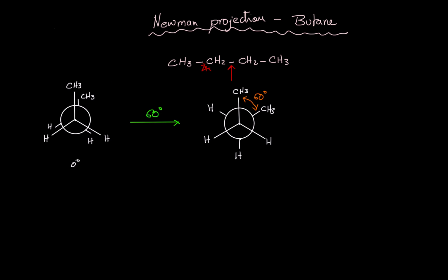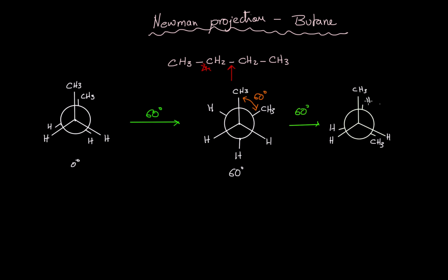The angle between the two CH3 groups is now 60 degrees, so this is called the 60 degree conformation. Another 60 degrees of rotation takes us back to an eclipsed conformation. I'll draw the back carbon, the front bonds, and the back bonds — CH3, H, H on the front, and the CH3 has moved, with H and H on the back. The angle between the two CH3 groups is now 120 degrees.